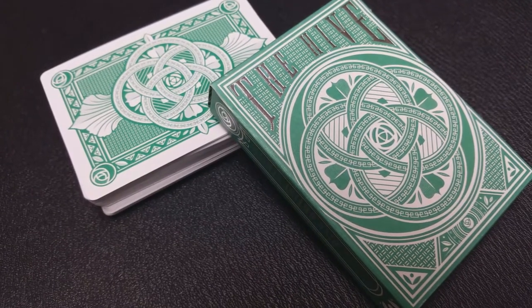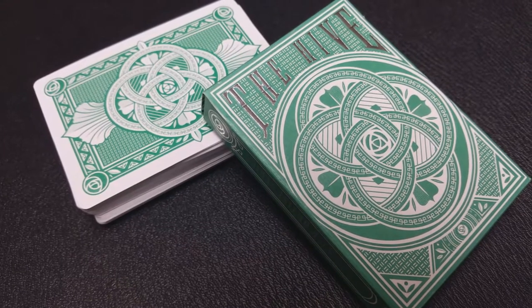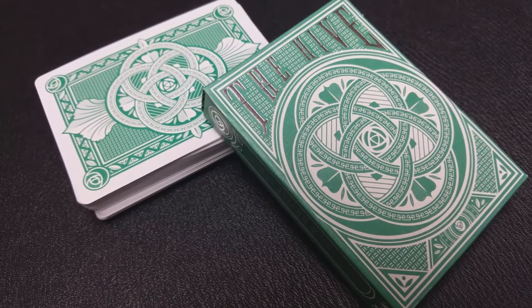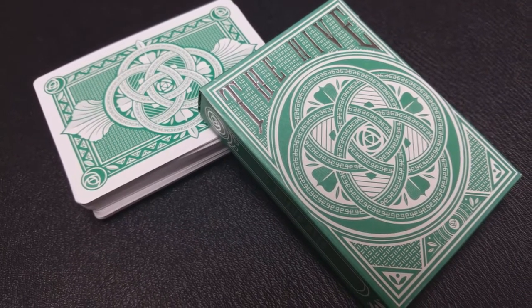Tuck case is foil embossed, silver foil, and done in this green color, wrapped throughout. It also has a little bit of embossing there as well. It says the Hive across the front. The tuck case front has a lot of these interlocking circles.